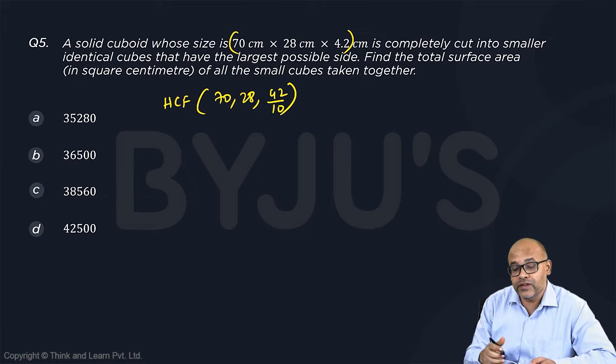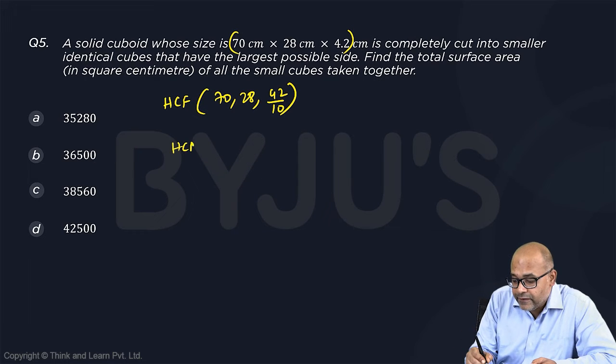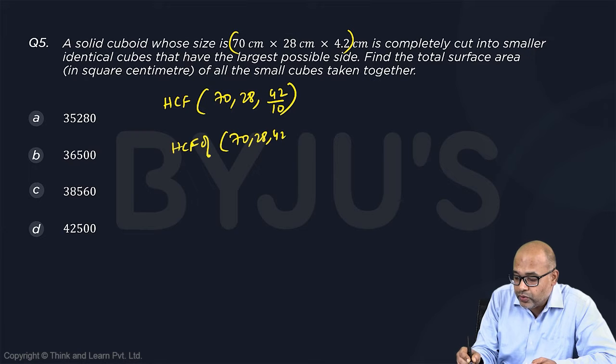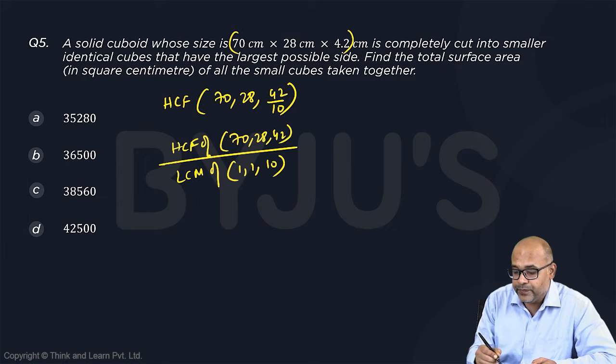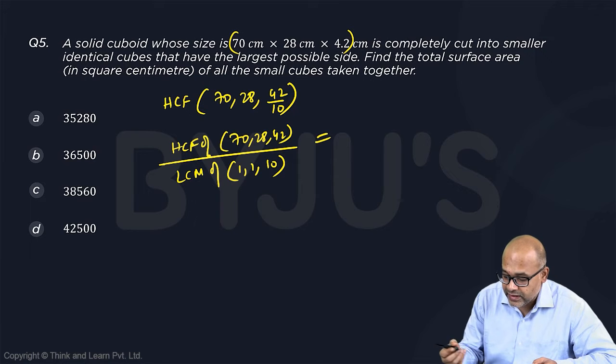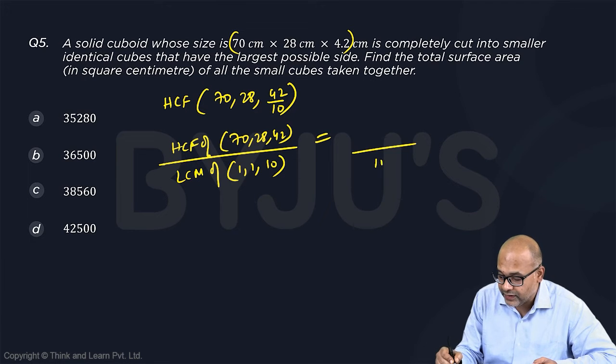So HCF of fractions is given as HCF of numerators that is 70, 28 and 42 divided by LCM of denominators that is 1, 1 and 10. So HCF of numerators and LCM of denominators. So LCM of denominators is 10.